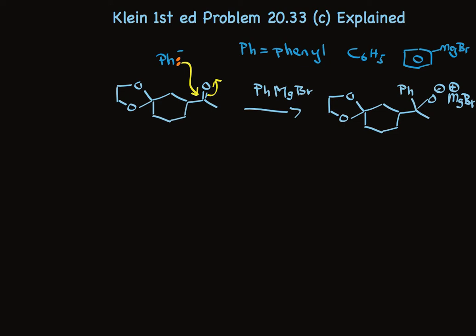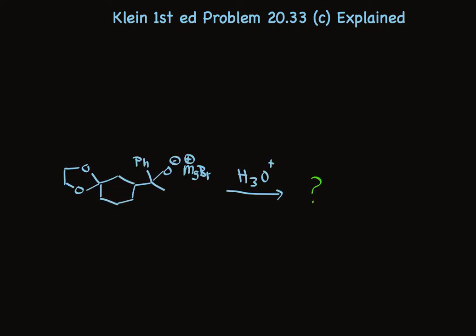Let's see what happens when we treat this with acid. Well, alkoxides are strong bases, so in the presence of acid, they're protonated. The pair of electrons represented by this negative charge is protonated, and this pair of electrons ends up on oxygen. We form a neutral molecule of water, and the product is an alcohol.